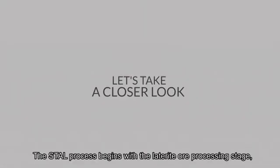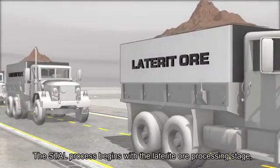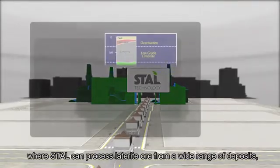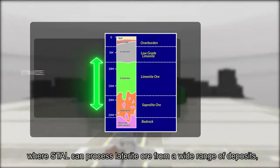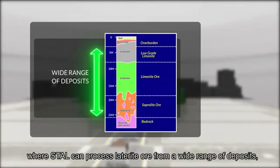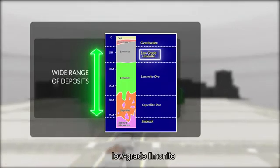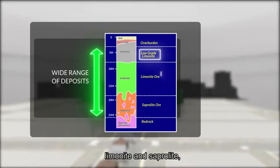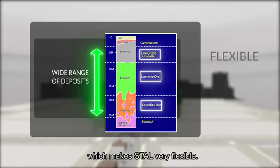The STAL process begins with the Laterite Ore Processing Stage, where STAL can process Laterite Ore from a wide range of deposits — low-grade limonite, limonite, and saprolite — which makes STAL very flexible.